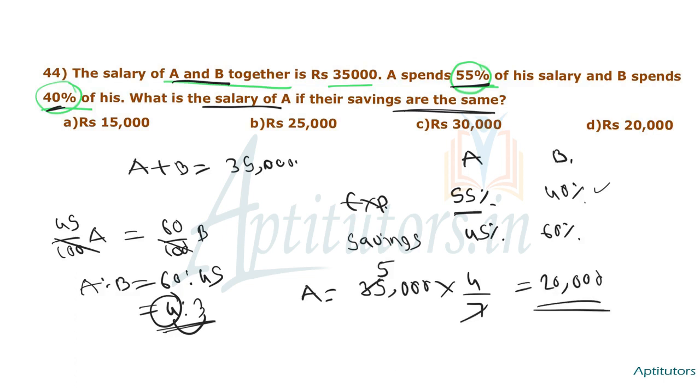A's salary is 20,000 rupees. Option D — 20,000 rupees — is the correct answer.